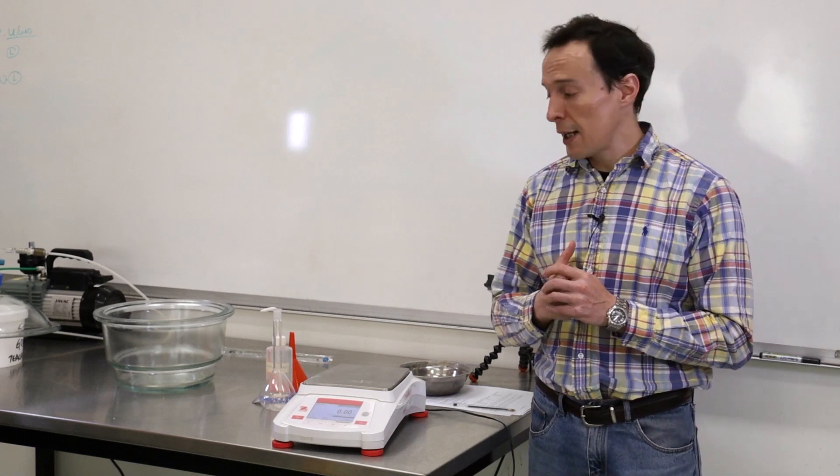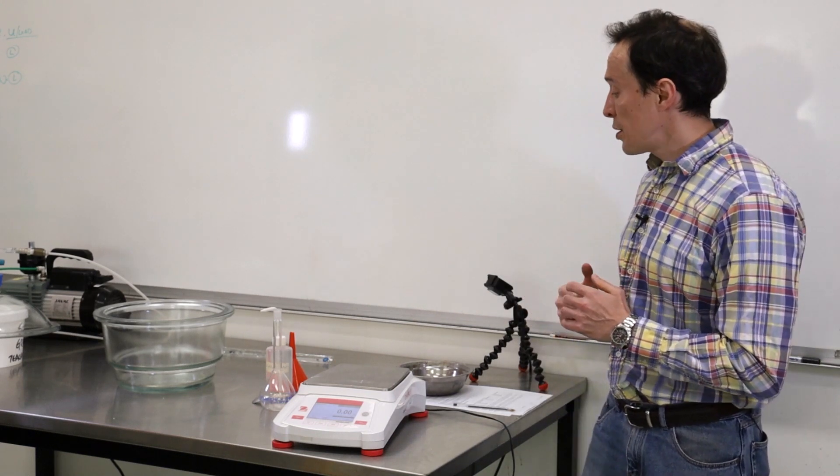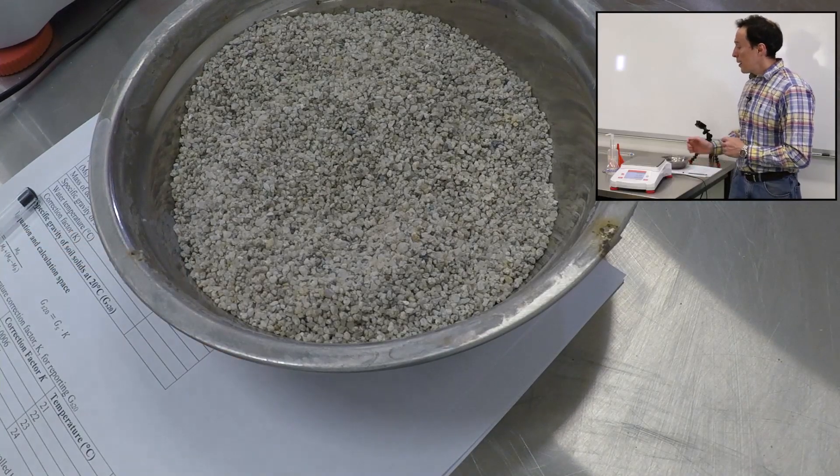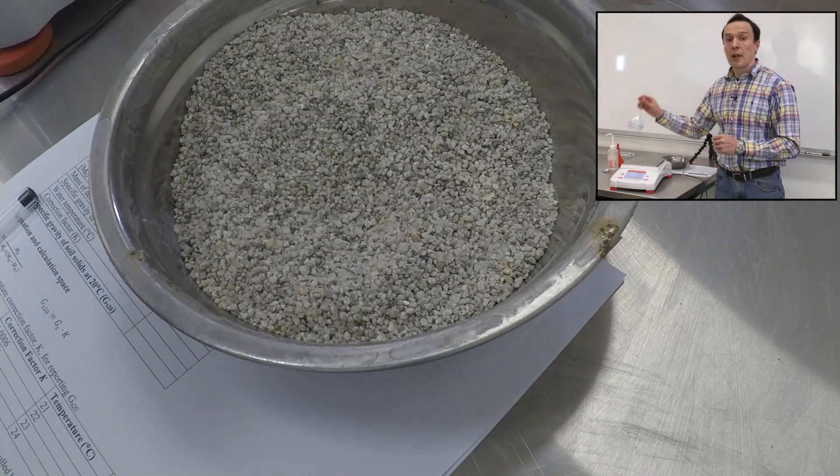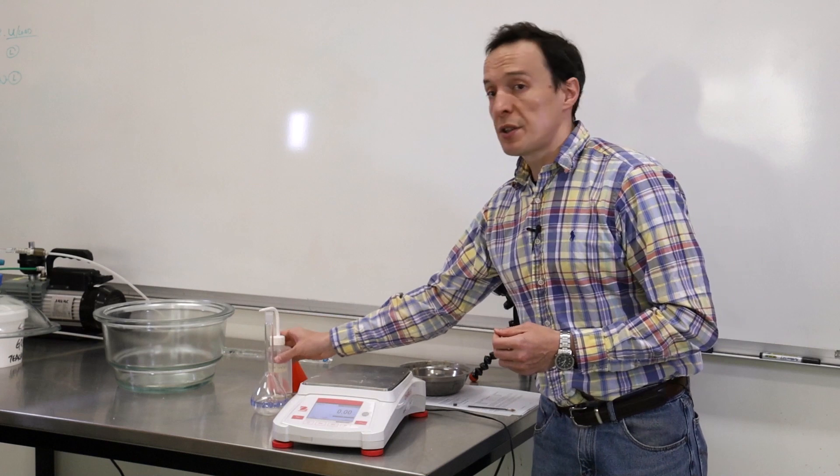And we need to get rid of this air. To do that, we will do this test, which is called specific gravity test. To do the test, we need soil, and I already have it here prepared for us. Then we're going to use flask or water bottle. We will also use distilled water.